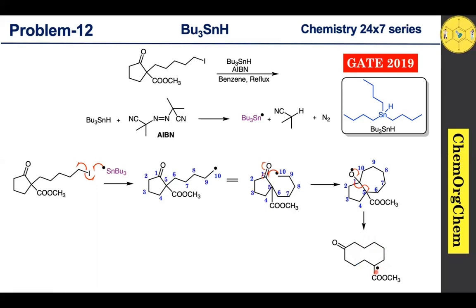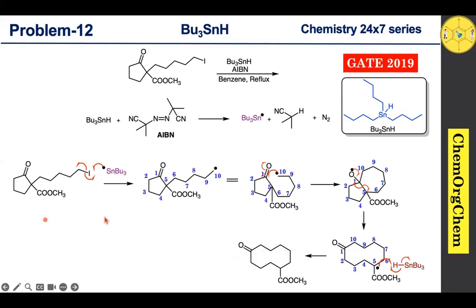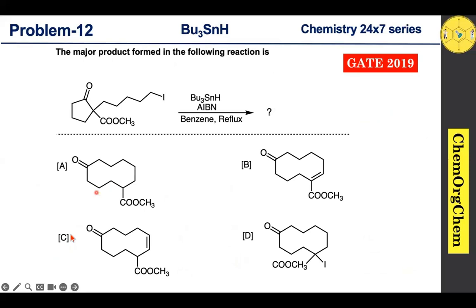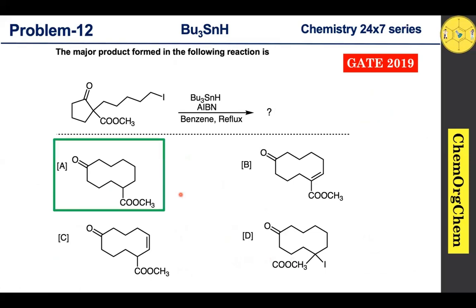After generation of this carbon-centered radical, it abstracts a proton from tributyltinhydride, which leads to the final product. The whole sequence of reaction is known as the Dowd-Beckwith ring expansion reaction. Among the four answer options, the correct answer for this question is answer A.